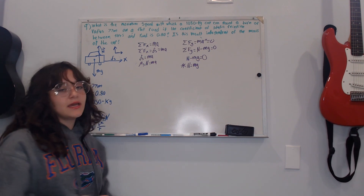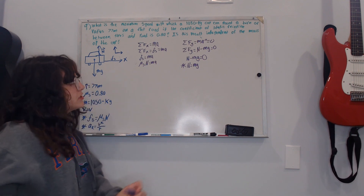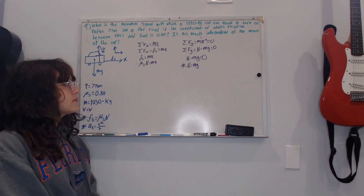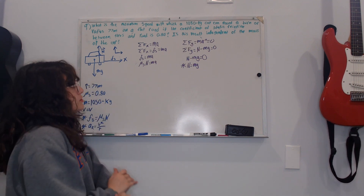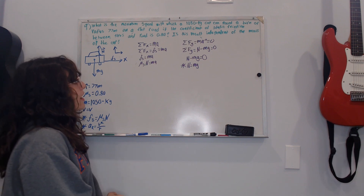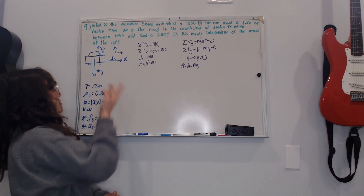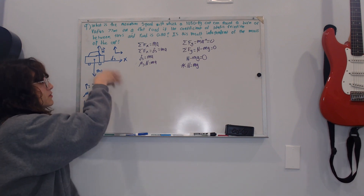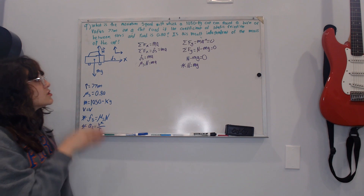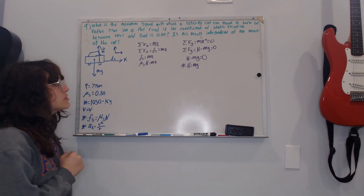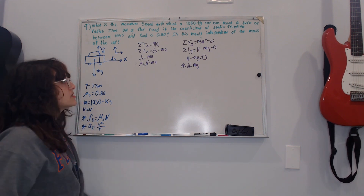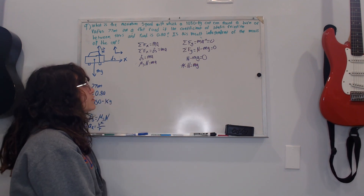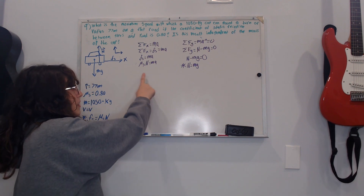The summation of forces along the y-axis equals mass times acceleration, but the acceleration is zero so that cancels out. The summation of forces along the y-axis equals N minus mg, which equals zero. So solving for N gives us N equals mg.